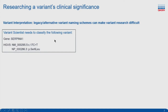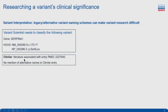When it comes to interpreting variants, legacy and alternative naming schemes can make researching a variant's clinical significance difficult. Let's say you're given this variant in gene SERPINA1 to look over. A typical workflow might be: using HGVS nomenclature for this variant, you first go to ClinVar. But because you don't necessarily want to take ClinVar entries at face value, you dig deeper into the entry and look at the associated literature. However, looking at the ClinVar entry for this Serine at Codon 6 nonsense change, there's no mention of alternative names or other schemes.